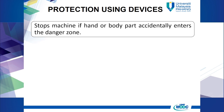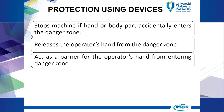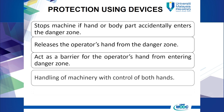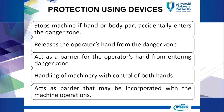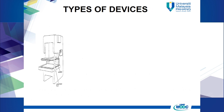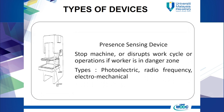Protection using devices is used to stop the machine if a hand or body part accidentally enters the danger zone, to release the operator's hand from the danger zone, to act as a barrier for the operator's hand from entering the danger zone, for handling of machinery with control of both hands, and to act as a barrier that may be incorporated with the machine operations.